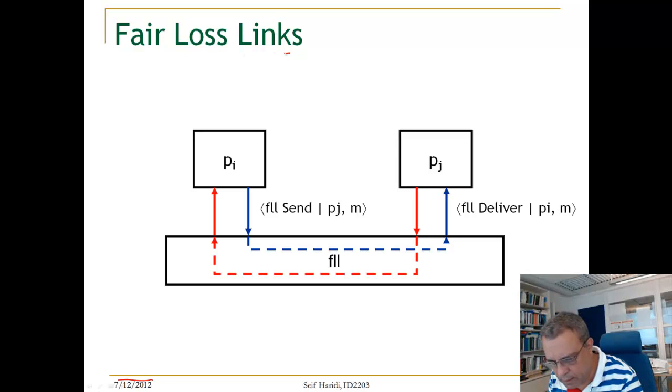Fair Loss Links are channels that guarantee that if a message is sent to another node, it has a non-zero probability that it will be delivered to that node. So let us look here. So this is a Fair Loss Link component.